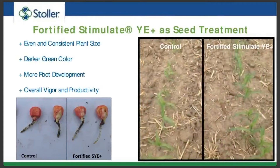Here's a side-by-side photo of Fortified Stimulate applied as a seed treatment. You can see more evenness of plants — they all emerged at the same time, whereas delayed emergence would normally produce some runts. You can also notice a darker green color, which indicates more root growth underneath — the plant is picking up more soil nutrients more quickly. As a result the plant has more available resources to push its early development and overall vigor and growth.